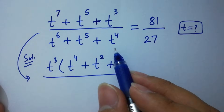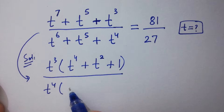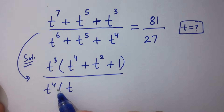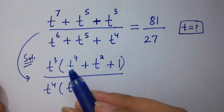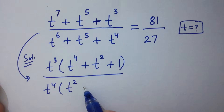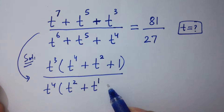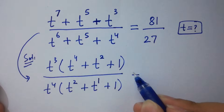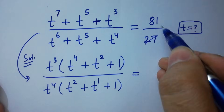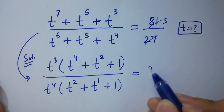In the denominator, t to the power 4 can be common. We factor out t to the power 4, giving t to the power 2 because 4 plus 2 is 6, plus t because 4 plus 1 is 5, plus 1. And 81 over 27 equals 3.